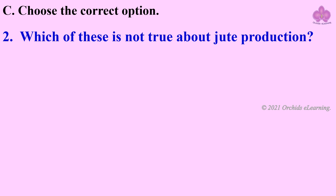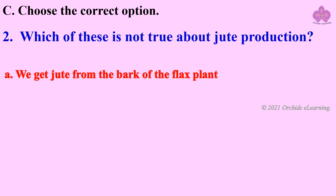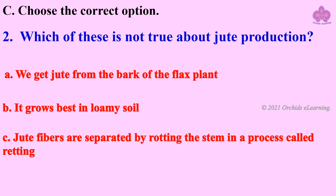Which of these is not true about jute production? Options: we get jute from the bark of the flax plant; it grows best in loamy soil; jute fibers are separated by rotting the stem in a process called retting; none of these.